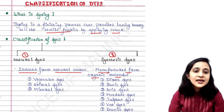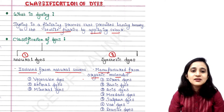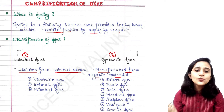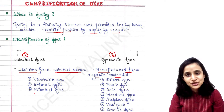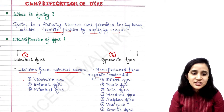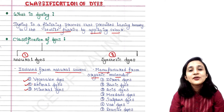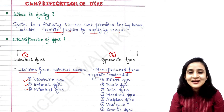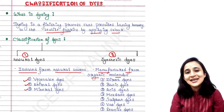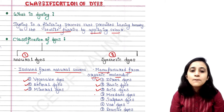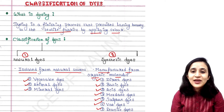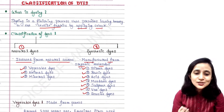From natural sources we get natural dyes, and there are three types: vegetable dyes, animal dyes, and mineral dyes. There are also different types of synthetic dyes: direct dyes, basic dyes, acid dyes, mordant dyes, sulfur dyes, vat dyes, and reactive dyes.